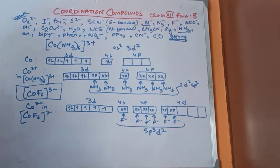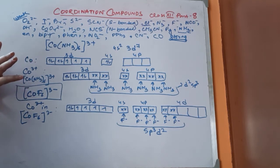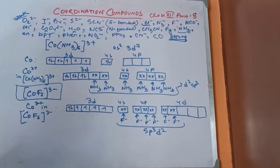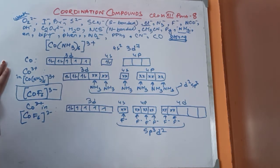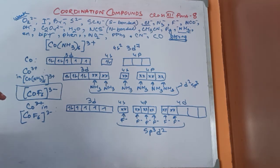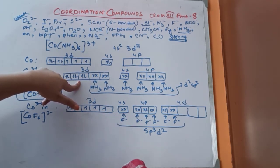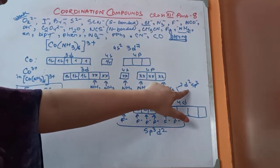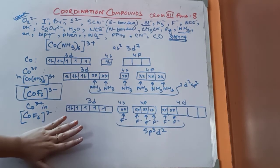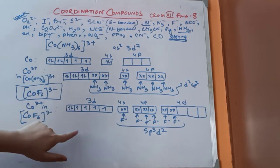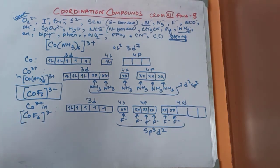Since ammonia is a stronger field ligand compared to fluoride, pairing occurs in the ammonia complex but not in the fluoride complex. In valence bond theory terms: magnetic susceptibility results prove this complex has no unpaired electrons, so it is diamagnetic with D2SP3 hybridization. For CoF6, results reveal 4 unpaired electrons, making it a paramagnetic outer orbital complex with SP3D2 hybridization.